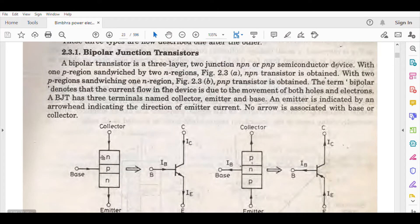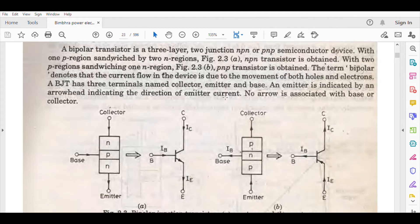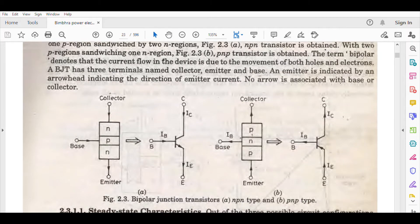Bipolar junction transistor is the same as you've learned. It is built as npn or pnp with base, collector, and emitter. A bipolar transistor is a three-layer, two-junction npn or pnp semiconductor device with one p-region sandwiched by two n-regions. You know about npn and pnp and how to make them.